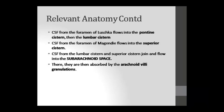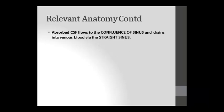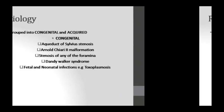CSF flows from Luschka's foramen to the pontine cistern, then to the lumbar cistern. From Magendie's foramen it flows to the superior cistern. The lumbar cistern and superior cistern join, and from there CSF flows into the subarachnoid space, where it is absorbed by arachnoid villi granulations. It is continuously produced and continuously absorbed. The absorbed CSF drains to the confluence of sinuses and enters the venous blood via the straight sinus.